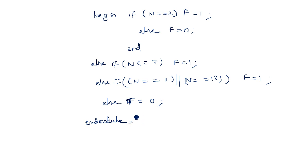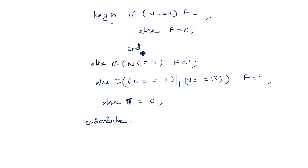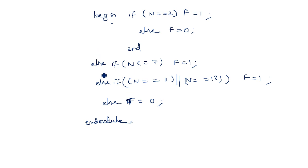So here, first we check if n is 1 — directly separate. Otherwise, if n modulus 2 equals 0, then we enter the begin block: if n equals 2, f equals 1; else f equals 0. We started with begin, so it ends with end. Then else-if conditions follow for other cases, and once all else-ifs are over, the final else handles the last condition. This style of writing if-else conditions is known as nested ifs.